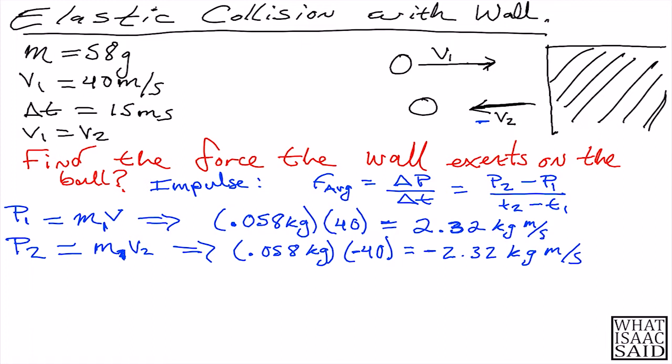Now we have P1 and P2, so we can actually go back to this equation and plug in these two values. Our average force is going to be equal to P2, which was minus 2.32, minus our P1, 2.32, over our changing time. Our change in time was 0.015 seconds minus 0 at T1.